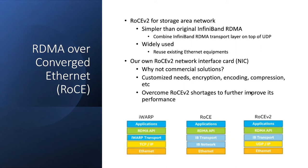We are building our own RoCEv2 network interface card. Why don't we use a commercial solution? Because we have some customized needs. We are building storage systems, so things like encryption, coding, and compression are typical storage requirements — and those are missing in current commercial RoCEv2 NICs. More importantly, we want to overcome RoCEv2's shortages and further improve its performance, because we care about performance a lot.